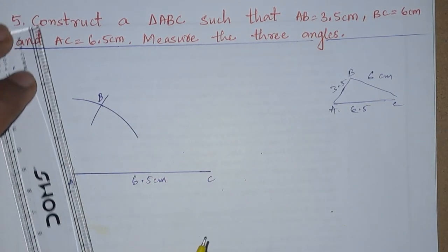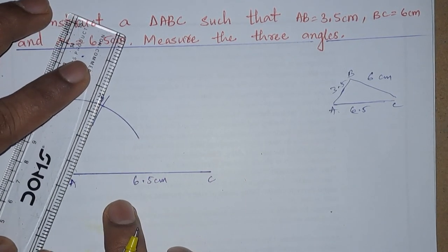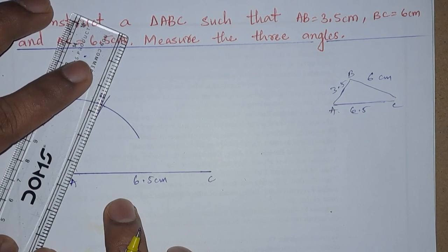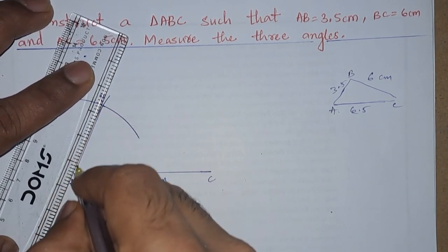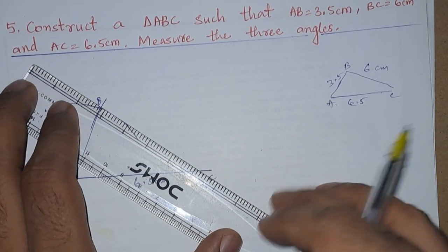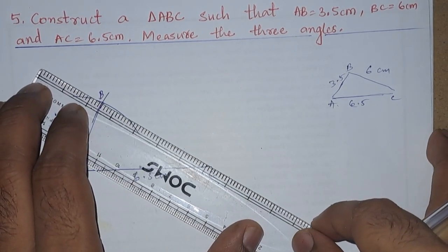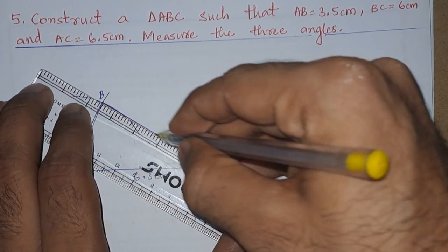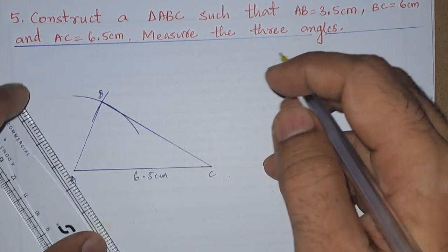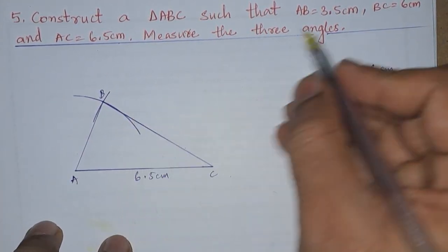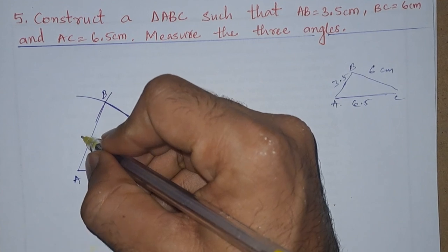Now we will join A to B and B to C. So let us join BC. Now after joining them, we will write down their measurements. A to B is 3.5, so 3.5 centimeters, and here it is 6 centimeters.